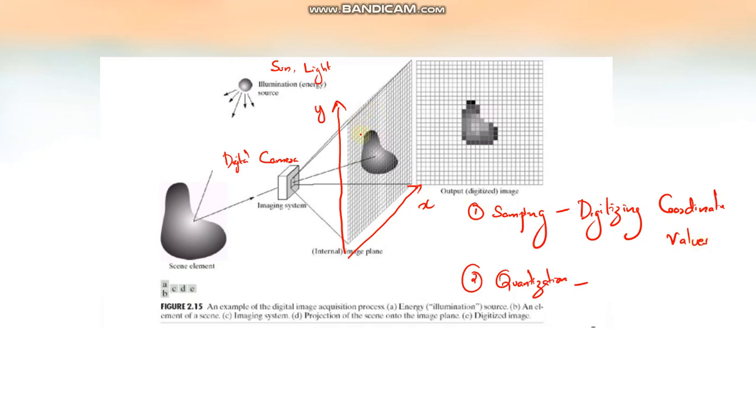Now this image has got certain gray level value. Those gray level values also must be discrete. So converting or digitizing the gray level or intensity value is called quantization.